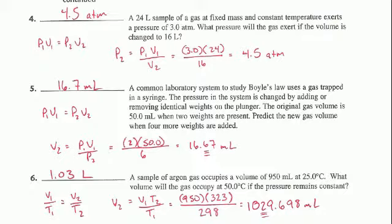So the question says, predict the new gas volume. So that means that we are solving for V2. I'm going to take my Boyle's Law, P1V1 is equal to P2V2, and I'm going to rearrange it to solve for V2.